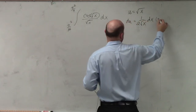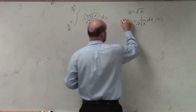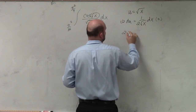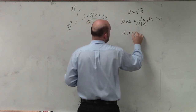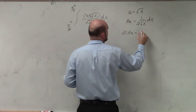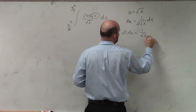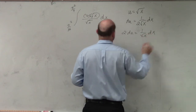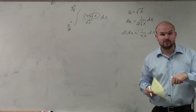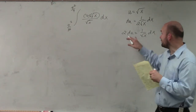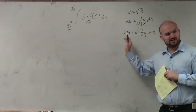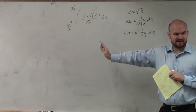So what we'll need to do is multiply by 2 on both sides. So we have 2 du is equal to 1 over the square root of x, dx. We have a dividing by the square root of x and a dx that we can represent by 2 du. However, this 2 we're just going to put on the outside of the integral.